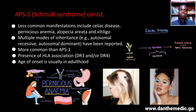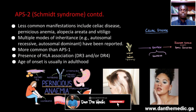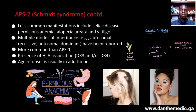There are some other less common manifestations of Schmitt syndrome, including celiac disease, pernicious anemia, alopecia areata, and vitiligo. It's more common than type 1, and there is presence of human leukocytic antigen association, mainly HLA-DR3 and/or HLA-DR4. The age of onset is usually in adulthood.